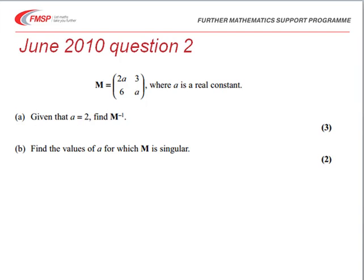In the question we're given a matrix with an unknown value a, so the matrix is 2a, 3, 6 and a. And in part A we're asked to find M inverse given that a is equal to 2. And in the second part of the question, asked to find the value of a for which M is singular.